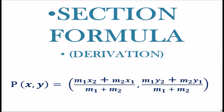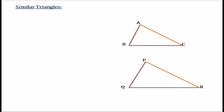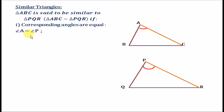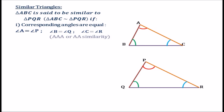Now let us derive the section formula using the conditions of similar triangles. We have two triangles: triangle ABC and triangle PQR. Triangle ABC is said to be similar to triangle PQR if the corresponding angles are equal — angle A equals angle P, angle B equals angle Q, and angle C equals angle R. This similarity is also known as AAA or AA similarity, because if two angles of a triangle are equal in measurement, the third angle will always be equal.